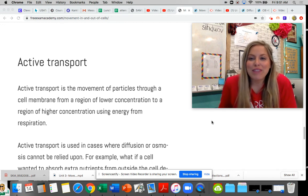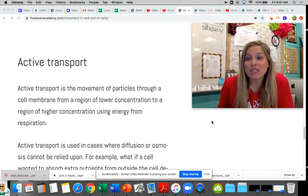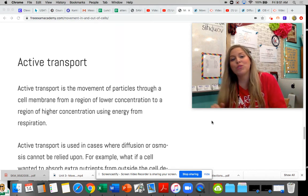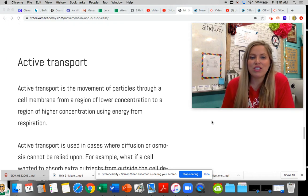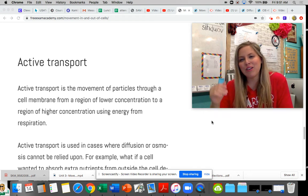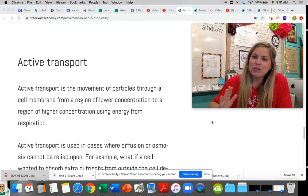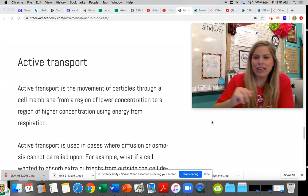Active transport by definition is the movement of particles through a cell membrane from a region of lower concentration to a region of higher concentration using energy from respiration. If you think back to diffusion, we were moving down a concentration gradient. Active transport is moving up the concentration gradient.